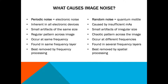Random noise is what the name implies — it's quantum mottle. It's caused typically by not enough mAs; if the kVp is too low, that can also cause it. It's still small artifacts, but they're of irregular size because it's picking up noise based on patient size. It's a chaotic pattern across the image, occurs at different frequencies, and is found throughout the frequency layers. So that makes it more difficult to remove using frequency processing — it's best removed by a spatial domain processing operation, which is pixel location specific.